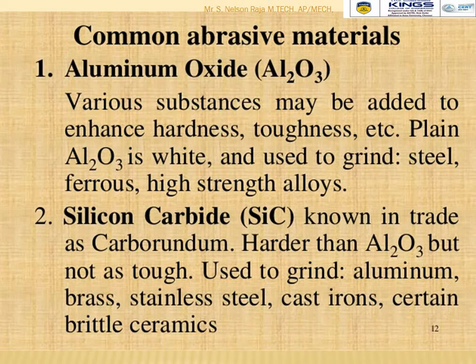The second abrasive material is Silicon Carbide, known in trade as Carborundum. It is harder than Aluminium Oxide but not as tough. It is used to grind Aluminium, Brass, Stainless Steel, Cast Iron, and brittle ceramics.